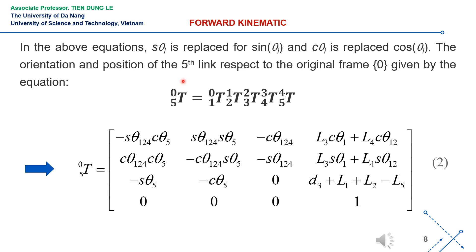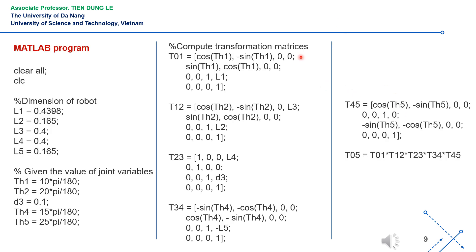By multiplying the matrices together, we can calculate the homogeneous matrix equation that describes the orientation and position of the final link, which is link 5 of the robot, relative to the base coordinate system 0. To perform forward kinematics calculations of the robot, we can write a program using an M-file in MATLAB software to compute the matrices we have just constructed. In the program, we assign specific values to the link lengths of the robot and assign specific values to the robot's joint variables. The detailed program is shown on this slide, and you can pause to review it in detail and easily carry it out yourself.